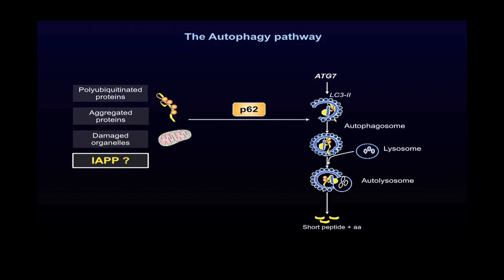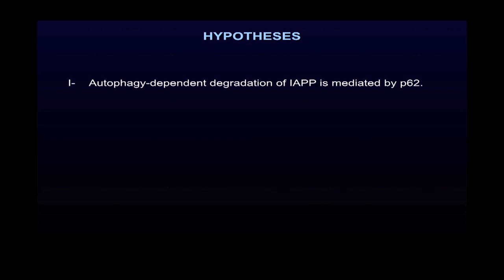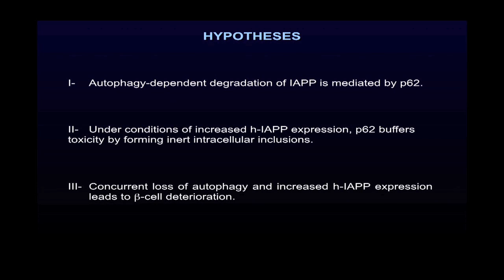So in this study, we investigated whether IAPP clearance is mediated through this mechanism and addressed the following hypotheses. First, we hypothesized that the autophagy-dependent degradation of IAPP is mediated by P62. Second, we hypothesized that under conditions of increased human IAPP expression, P62 buffers toxicity by forming inert intracellular inclusions. And finally, we hypothesized that concurrent loss of autophagy and increased human IAPP expression leads to beta cell deterioration and diabetes.